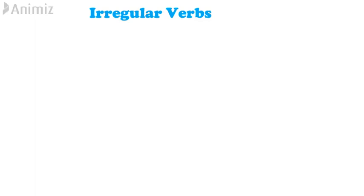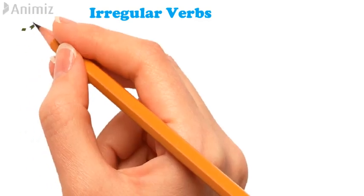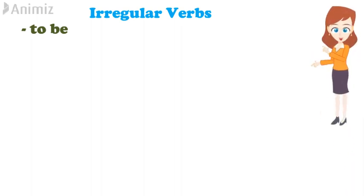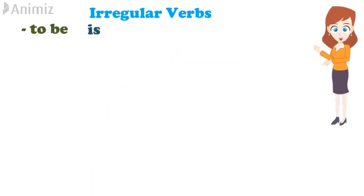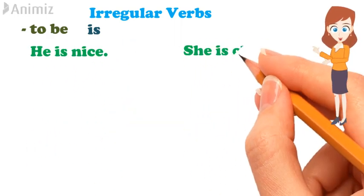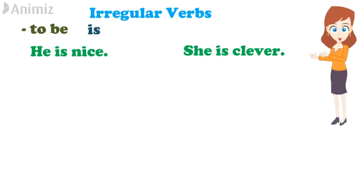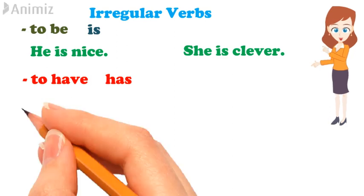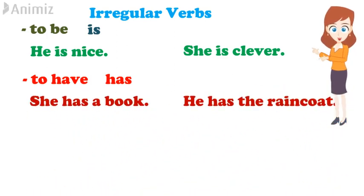There are two irregular or special verbs to remember for this kind. First is 'to be'. Simple present tense madhe, trutiyo purushi ek vachane kartya saati, third person singular 'is' he rooap vapartat. For example: he is nice, she is clever. And the second is 'to have'. Third person singular saati, to have ze 'has' he rooap simple present tense madhe vapartat. For example: she has a book, he has the raincoat.